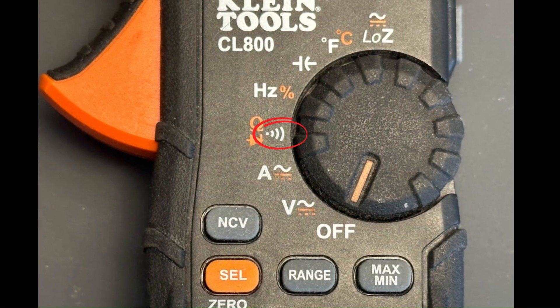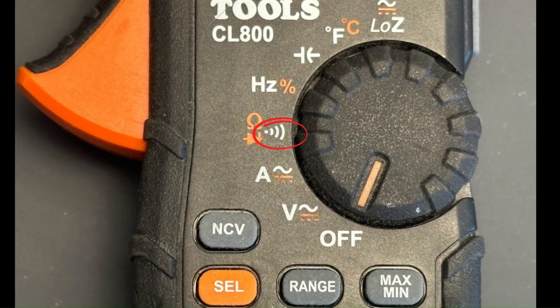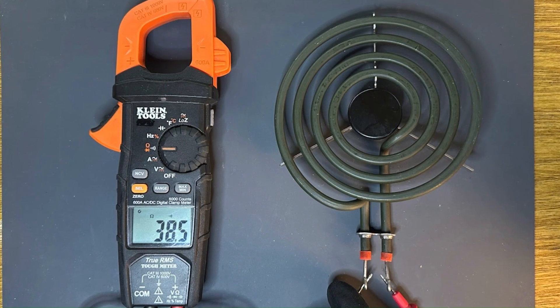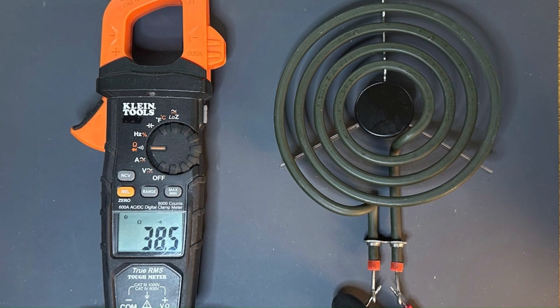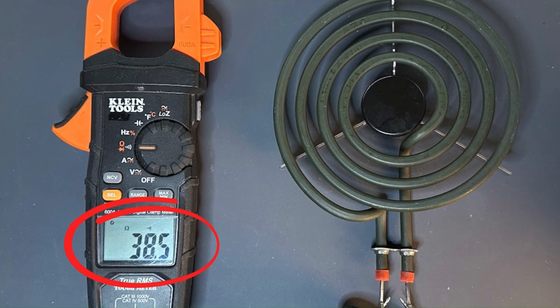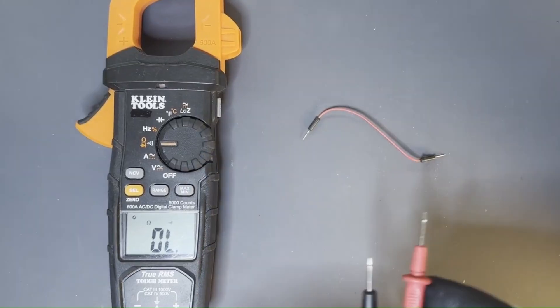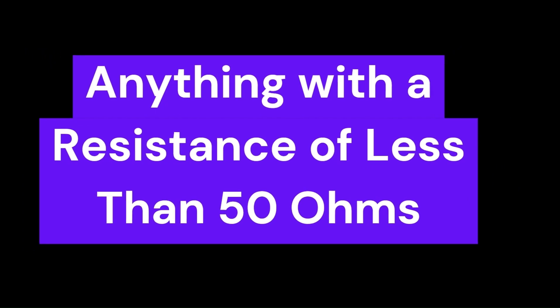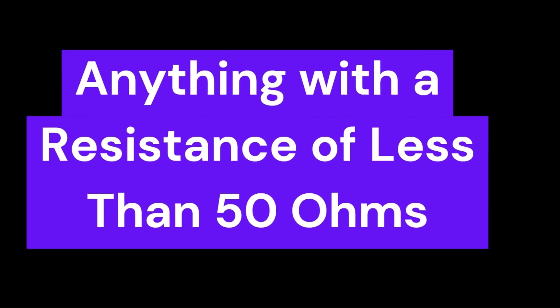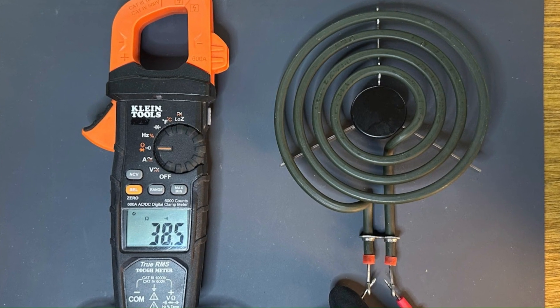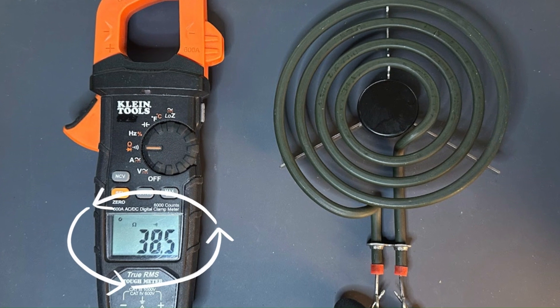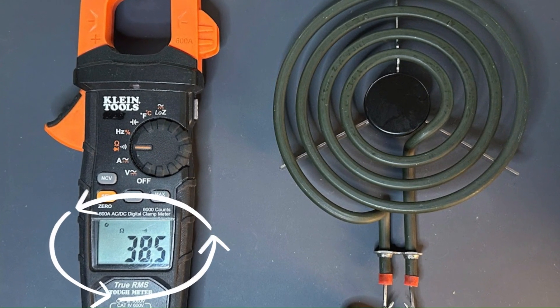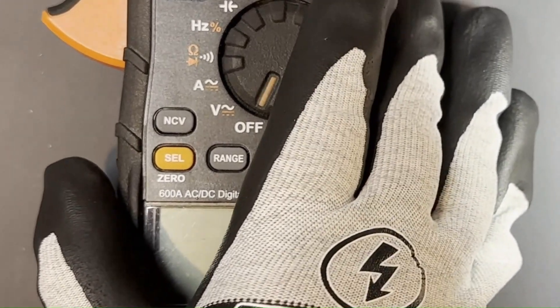Continuity check. Lots of meters have something called continuity check. It is a quick and convenient way of indicating whether a very low resistance is present — less than 50 ohms for this meter. This is handy for testing wires, low ohm loads like heating elements, and anything that has a resistance of under 50 ohms. In this mode, the meter will beep when it detects continuity and if under 50 ohms will also show its actual resistance. To access this mode, simply turn the dial to the same place you use to check for resistance.